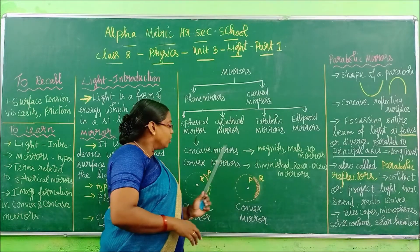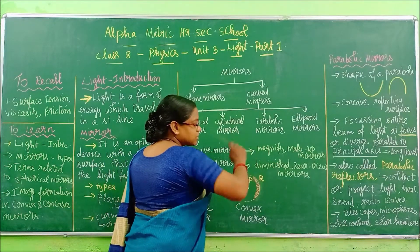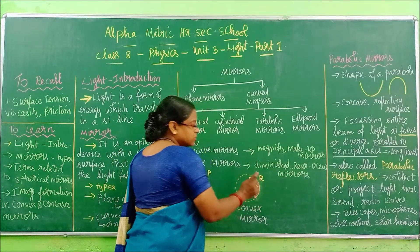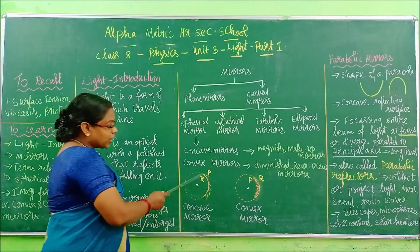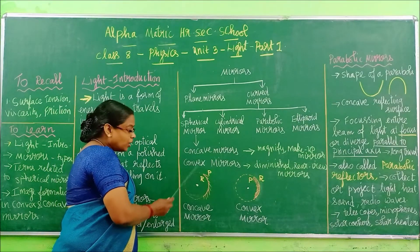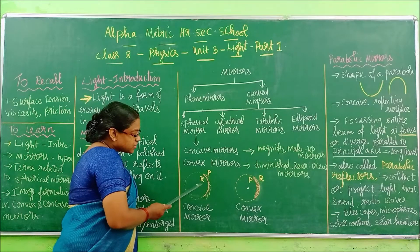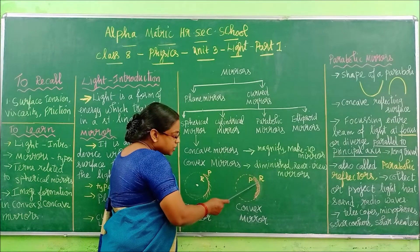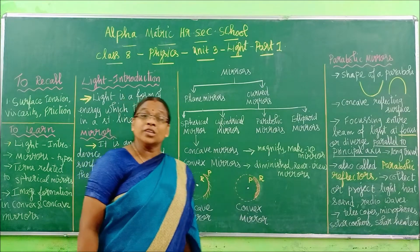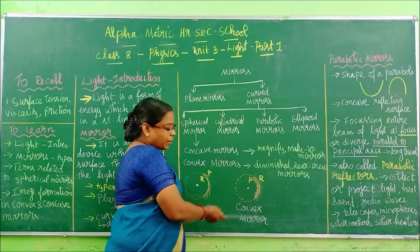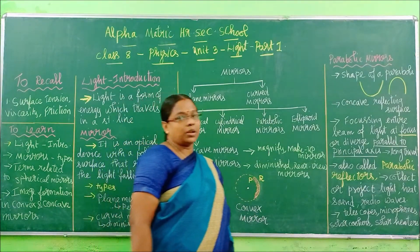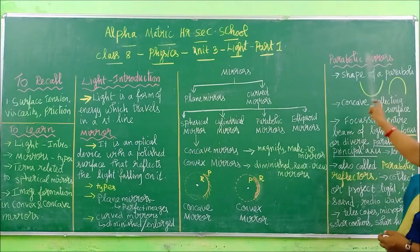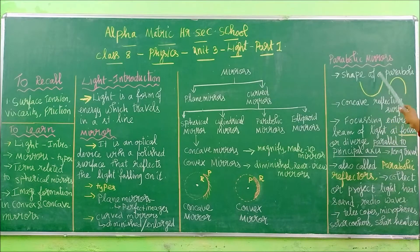Very important points: concave mirrors will magnify the images and are used as make-up mirrors. Convex mirrors show a diminished image and are used in rear mirrors. If reflection happens at the concave part, or if the reflecting surface faces towards the centre of the sphere, then it is a concave mirror. If the reflecting surface is away from the centre and reflection happens at the convex part, then it is a convex mirror.